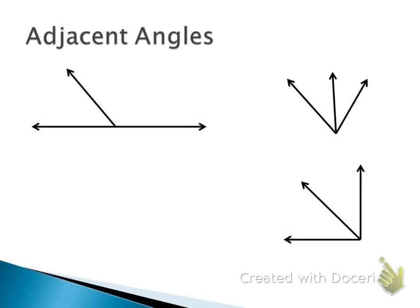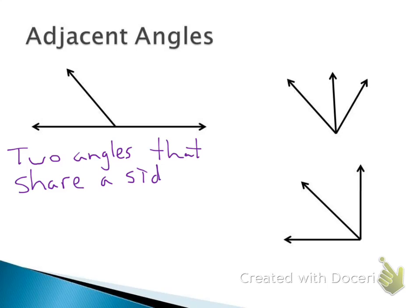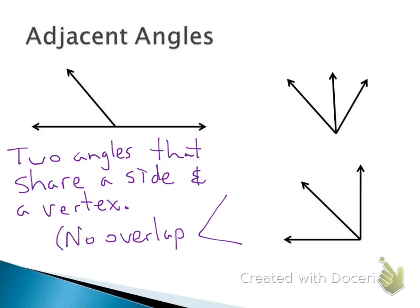Now we get to adjacent angles. Adjacent angles are two angles that share a common side and a vertex, but they have no common interior points — meaning there's no overlap. If I drew an angle and then put another one on top of it, I wouldn't say those two angles are adjacent because there's an overlap. We can't have that. So adjacent means they share a side and they share a vertex with no overlap.